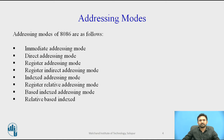The 8086 processor lets you access memory in many different ways. The 8086 memory addressing modes provide flexible access to memory, allowing you to easily access variables, multiple points, arrays, records, pointers, and other complex data types.